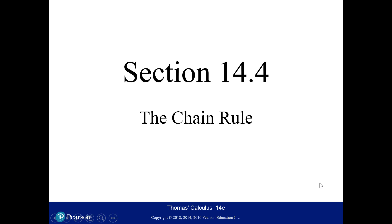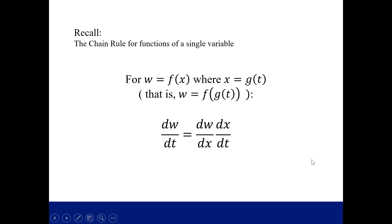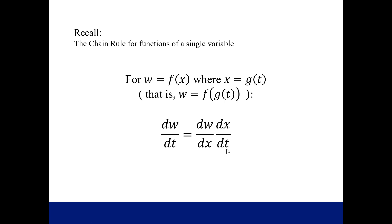In this video, we're going to talk about the chain rule for functions of multiple variables. First, let's recall how the chain rule worked for a single variable function. If w is a function of x and then x is a function of t, for the composite function w where the independent variable is t, we take the derivative of w with respect to x and multiply it by the derivative of x with respect to t. That was our chain rule for a single variable function.